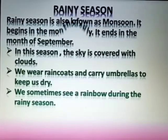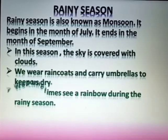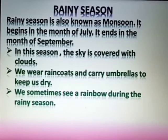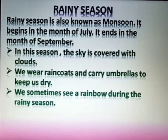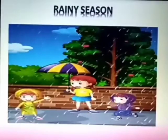Rainy Season. Rainy season is also known as monsoon. It begins in the month of July and ends in the month of September. In this season, the sky is covered with clouds. We wear raincoats and carry umbrellas to keep us dry. We sometimes see a rainbow during the rainy season. Picture of rainy season.